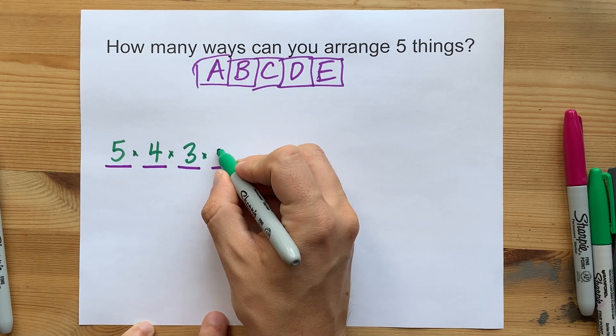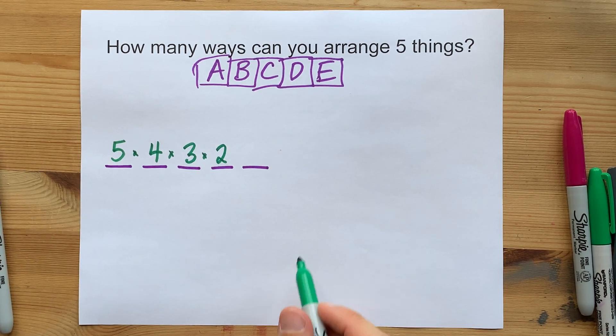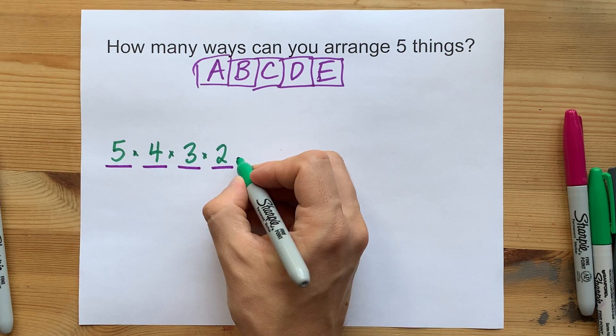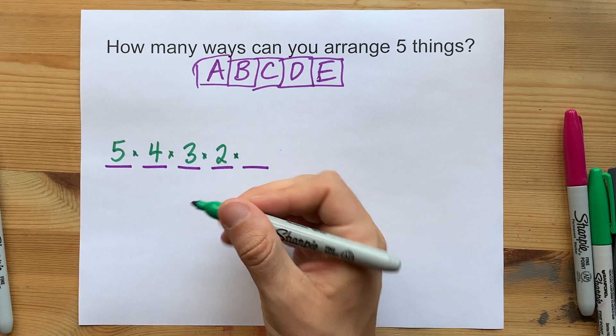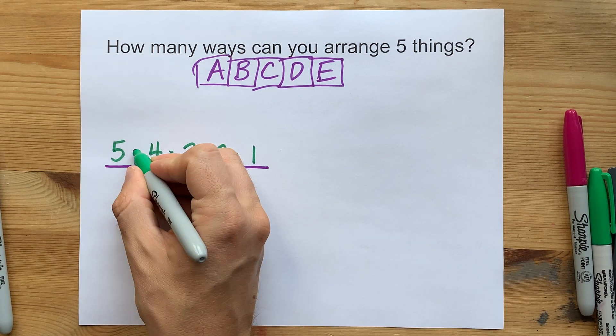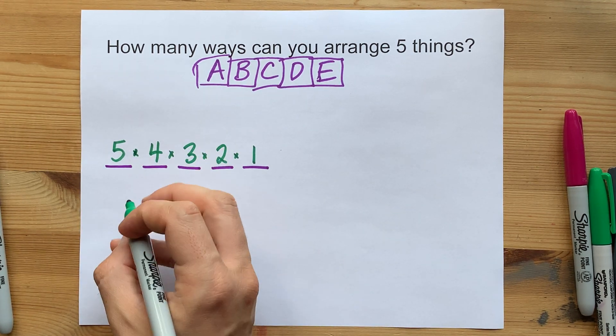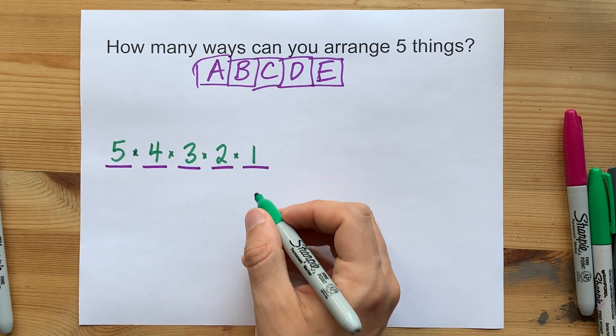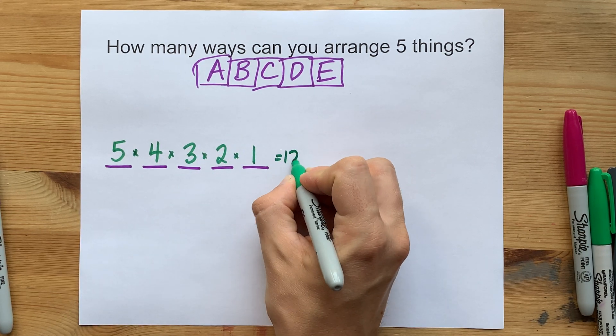Then, you have only two letters to choose from. And when you're deciding which one to put last, you don't get a choice. There's only one option you can use for that. So, the way that you can calculate this is five times four times three times two times one, which is 120.